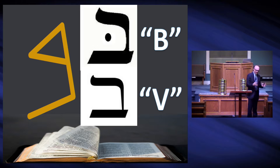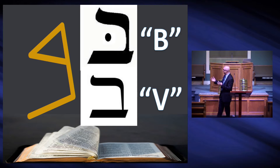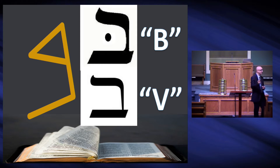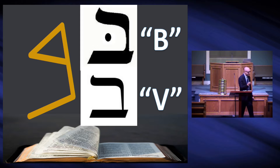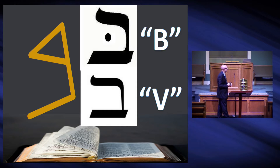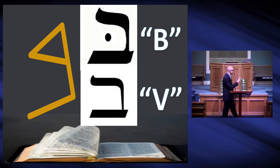Hebrew doesn't use vowels the way we do — A, E, I, O, U. They use little marks. Remember when Jesus says in Matthew chapter five, the Sermon on the Mount, not even the smallest jot or tittle would evaporate from the law. Those little jots and tittles not only describe pronunciation but help insert vowel sounds. With the letter Beth, there's a little dot in the middle — if you see it, it's pronounced with a B sound. Without the dot, you pronounce it like a V.